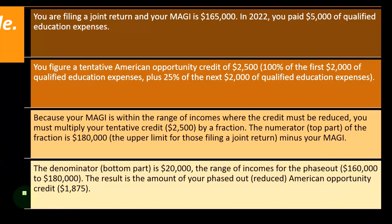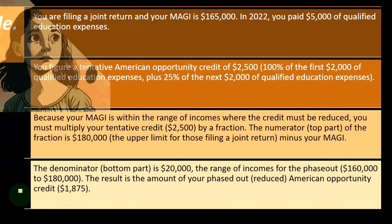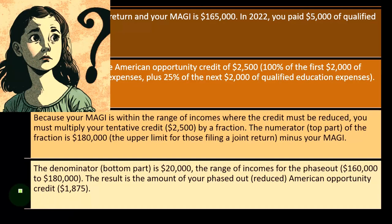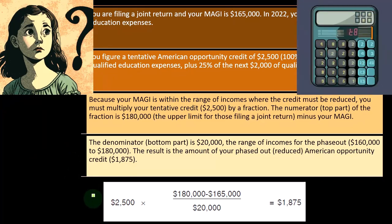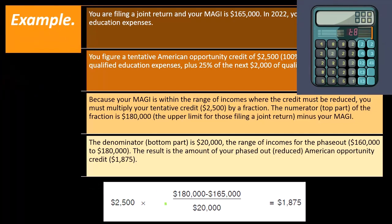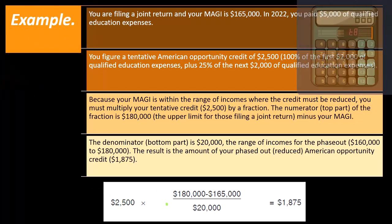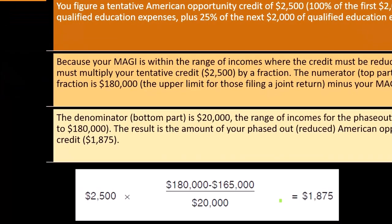You're probably not going to do that in your head — you'll just look at the range of when the phase-out starts and ends, and the software will help you with the calculation in most cases. Although it's not that complex: 2,500 times (180,000 minus 165,000) divided by 20,000 gives us $1,875.